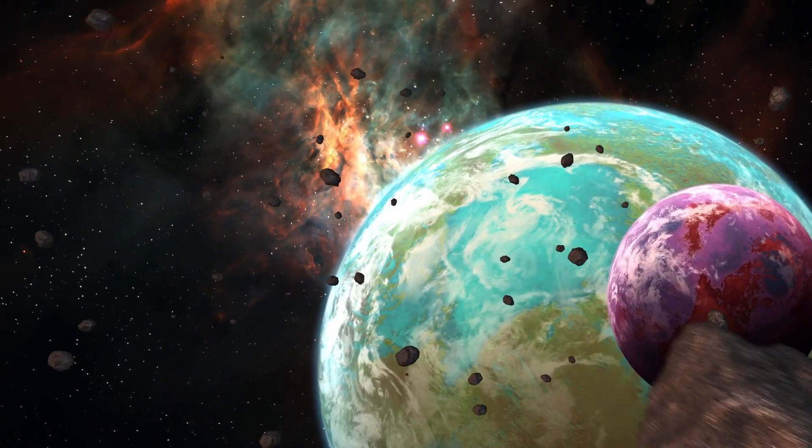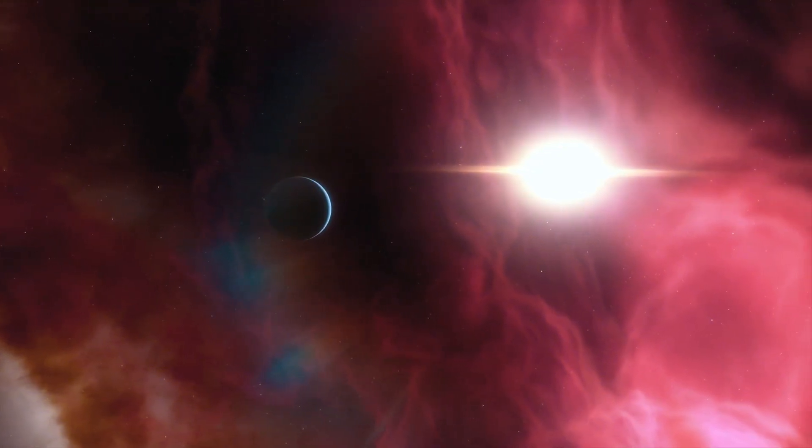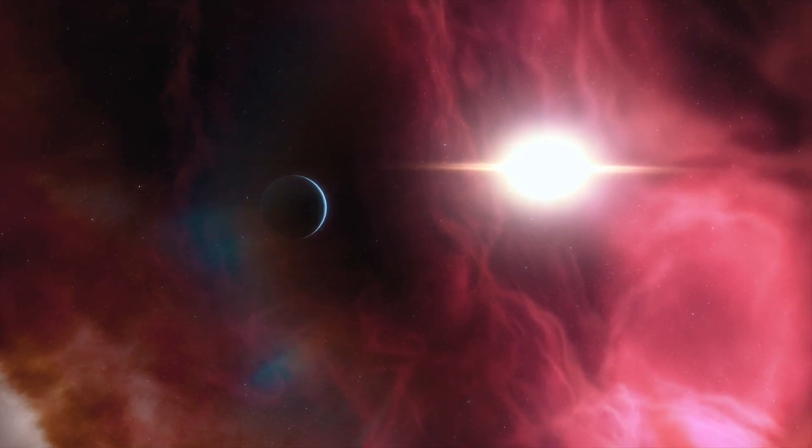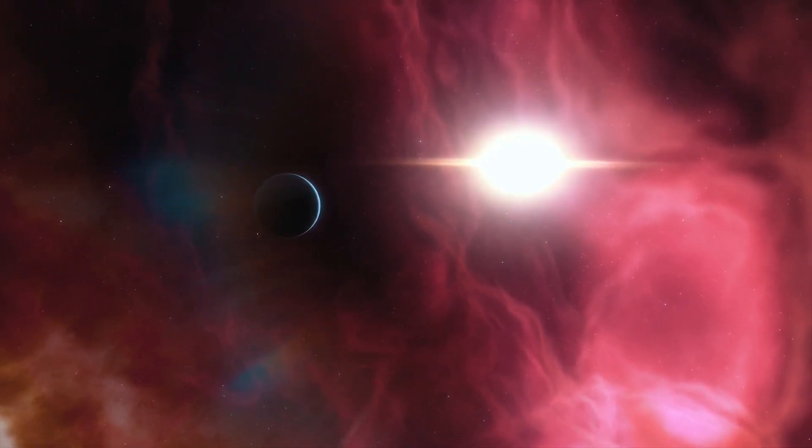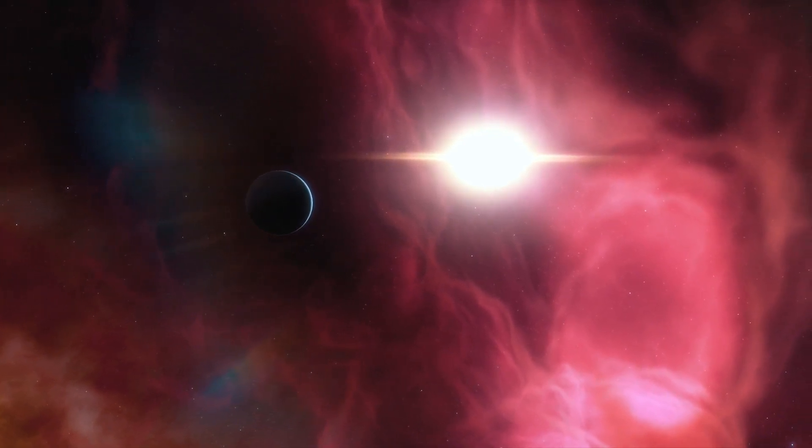The Goldilocks zone is an area surrounding a star where the temperature is neither too hot nor too cold to support liquid water. However, the planet must also have an appropriate size, and the star around which the exoplanet revolves must be of a specific type and stable existence.